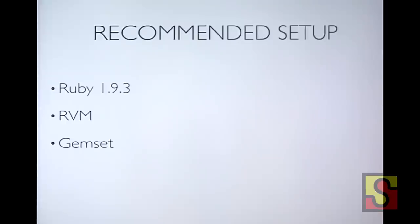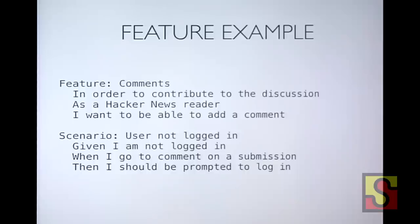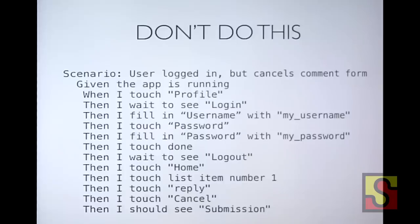If you use RVM, I recommend creating a gem set — basically an isolated environment where you can just have the Calabash gem, so you don't have to worry about conflicts with other Ruby applications on your Mac. As you heard from Carl, Calabash tests are made up of feature files (the Cucumber part) and step definitions, which are in Ruby. One great thing about Calabash is it comes with predefined steps, so you don't have to know Ruby to start using it.